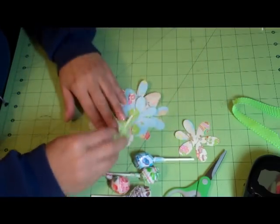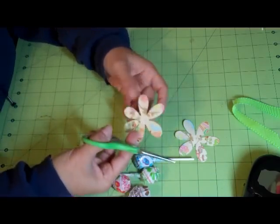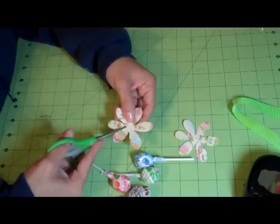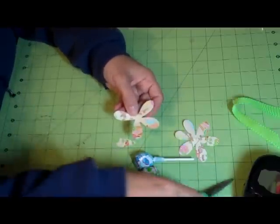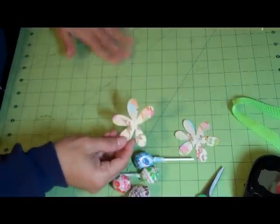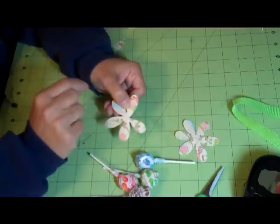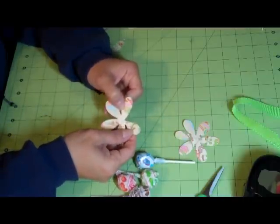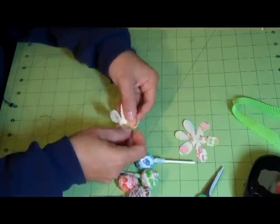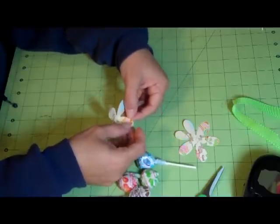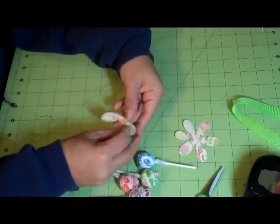This next one's a little bit more tricky. You're going to actually be removing one of the petals. Cut into the center removing one petal, and then take the space that you don't have a petal in and fold the two remaining petals into each other, overlapping them. You're creating kind of a cone shape.